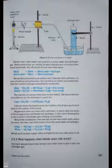Calcium starts floating because the bubbles of hydrogen gas stick to the surface of the metal. Magnesium does not react with cold water. It reacts with hot water to form magnesium hydroxide and hydrogen. It also starts floating due to the bubbles of hydrogen gas sticking to its surface. Metals like aluminium, iron, and zinc do not react either with cold or hot water. But they react with steam to form metal oxides and hydrogen.